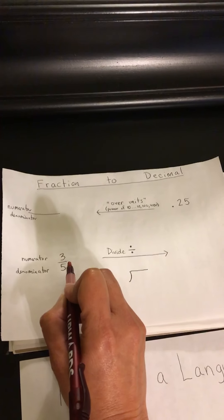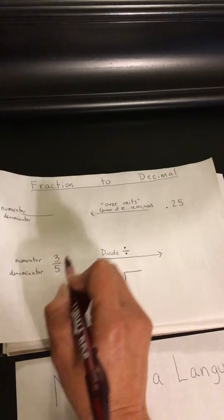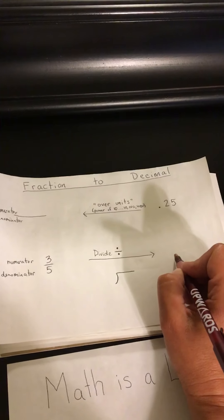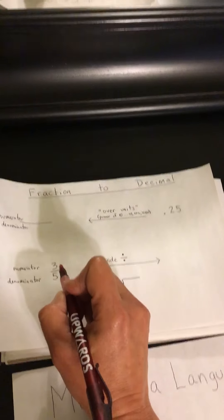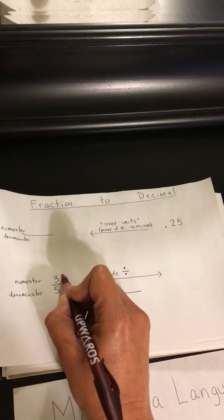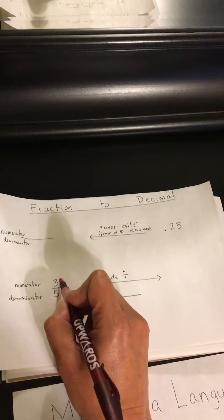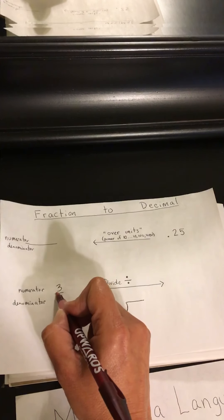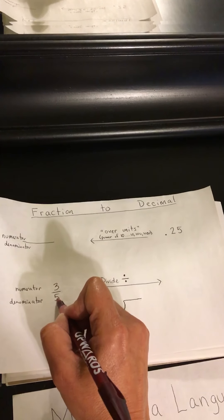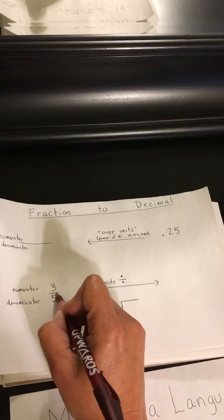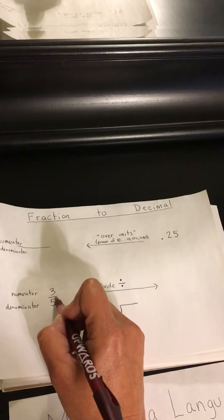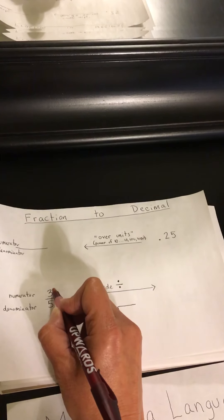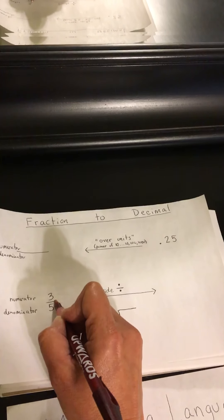So in order to divide this number, this fraction, and to come up with a decimal, we're going to read the division problem from top to bottom. So the numerator divided by the denominator, 3 divided by 5. And you can pretend that this little symbol here is a division and read it just like you would a book from top to bottom, 3 divided by 5.